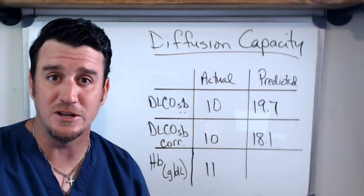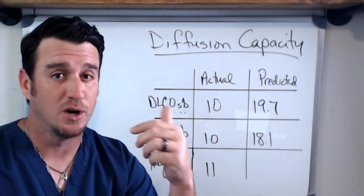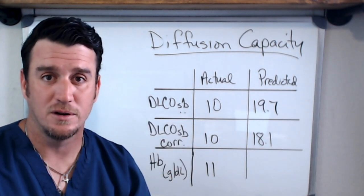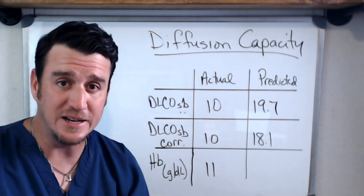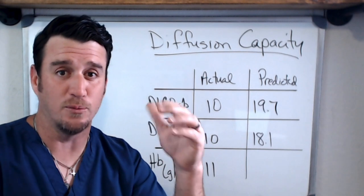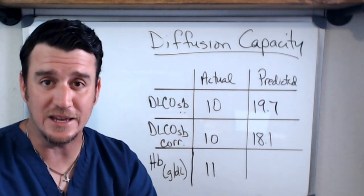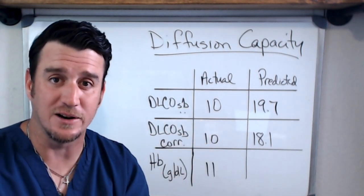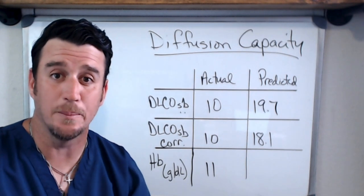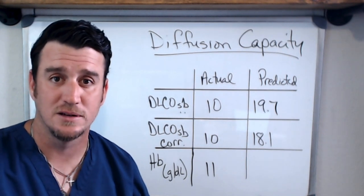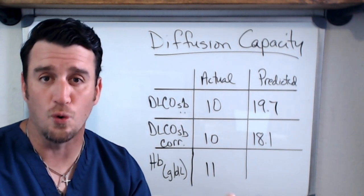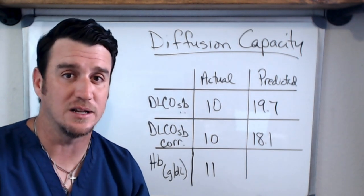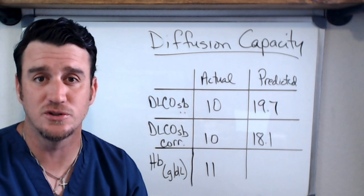Those are kind of the big key takeaways from this. Decreased diffusion doesn't tell you anything in helping you get to obstructive, restrictive, or whatever. It just tells you that the alveoli's ability to transfer gas from within to within the capillaries is somehow impaired. That's all it is. Now I told you a minute ago this is reduced from normal. Now normal, just like lung volumes, is 80 to 120 percent.